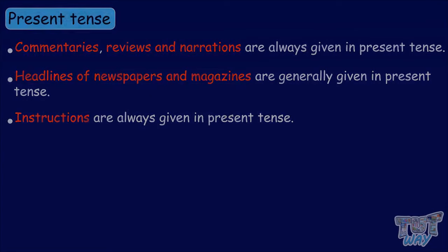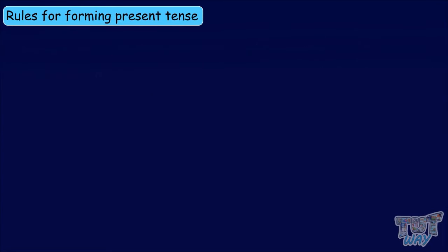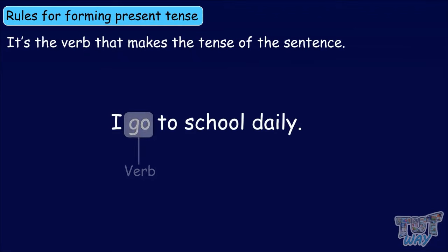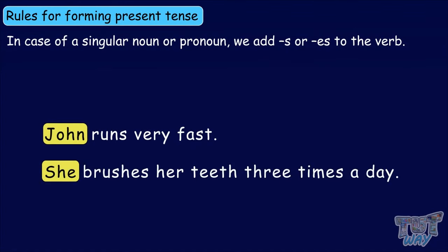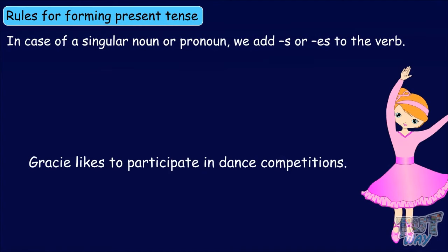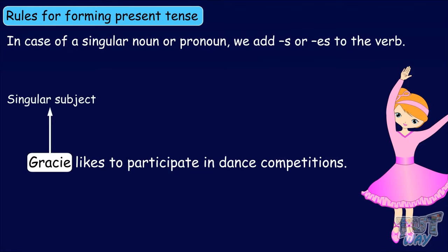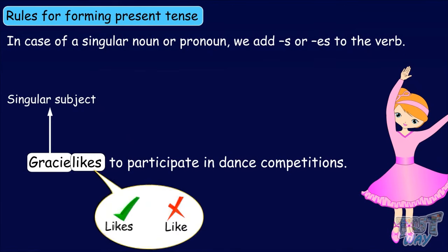Now let's learn some rules for forming the present tense. It's the verb that makes a tense in a sentence. If we are making simple present tense and the noun or pronoun in the sentence is singular, then we add 's' or 'es' to the verb. For example: 'Gracie likes to participate in dance competitions.' Here, the subject is Gracie and the verb is 'likes.' Since the subject is a singular naming word, we have used 'likes' and not 'like.'